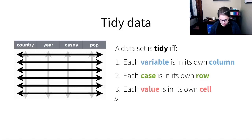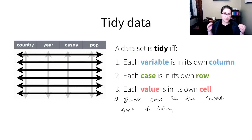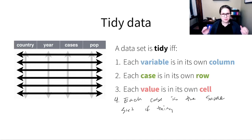I usually add a fourth rule, which is that each case is the same sort of thing. One type of untidy data that I encounter a lot has to do with education. You'll get a spreadsheet of education data from, say, the state of Minnesota, and it will have observations where some are schools, some are school districts, and then there's a row that's the whole state. Those cases or observations aren't the same kind of thing — you can't compare them apples to apples. So I usually add that on to the rules for tidy data.